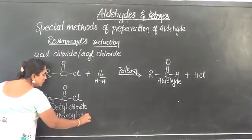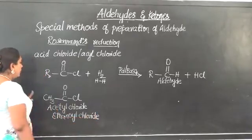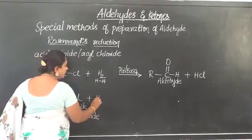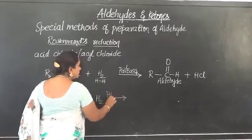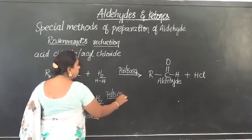Its IUPAC name will be ethanoyl chloride. So ethanoyl chloride or acetyl chloride is treated with hydrogen in presence of palladium supported over barium sulphate. What happens?